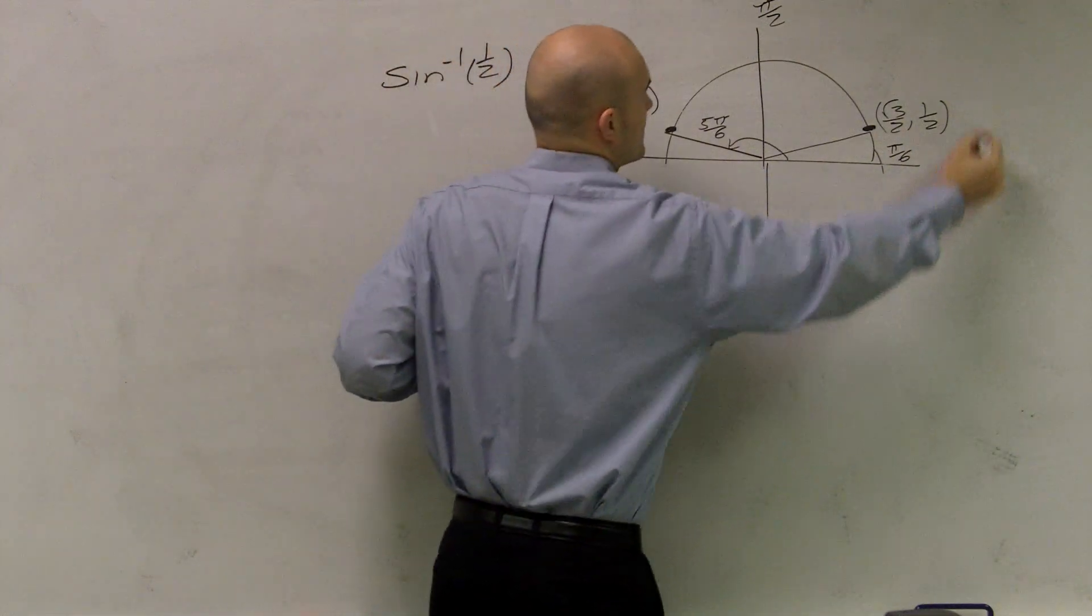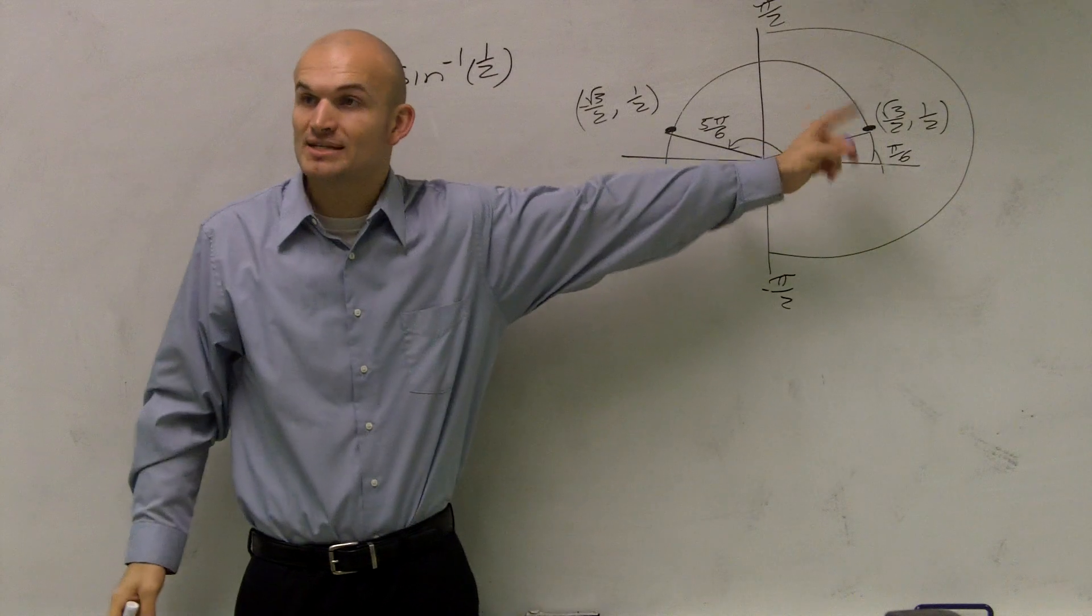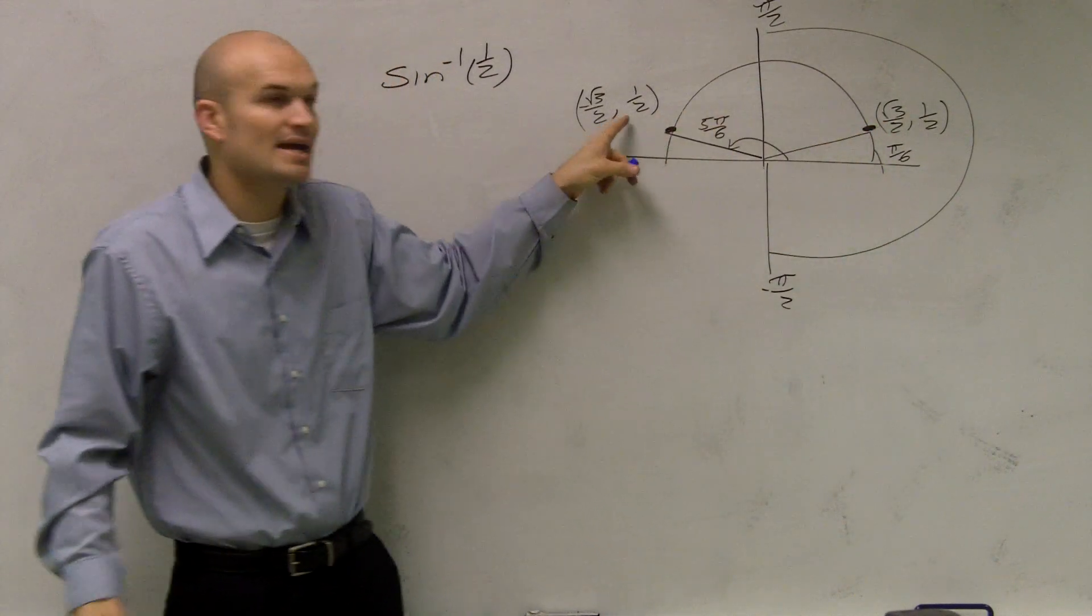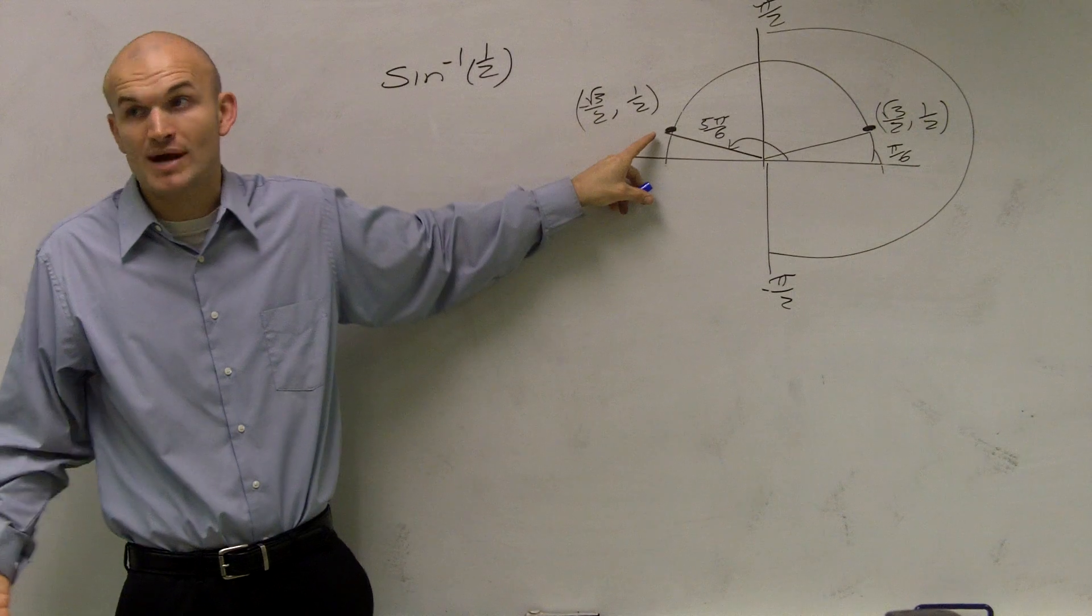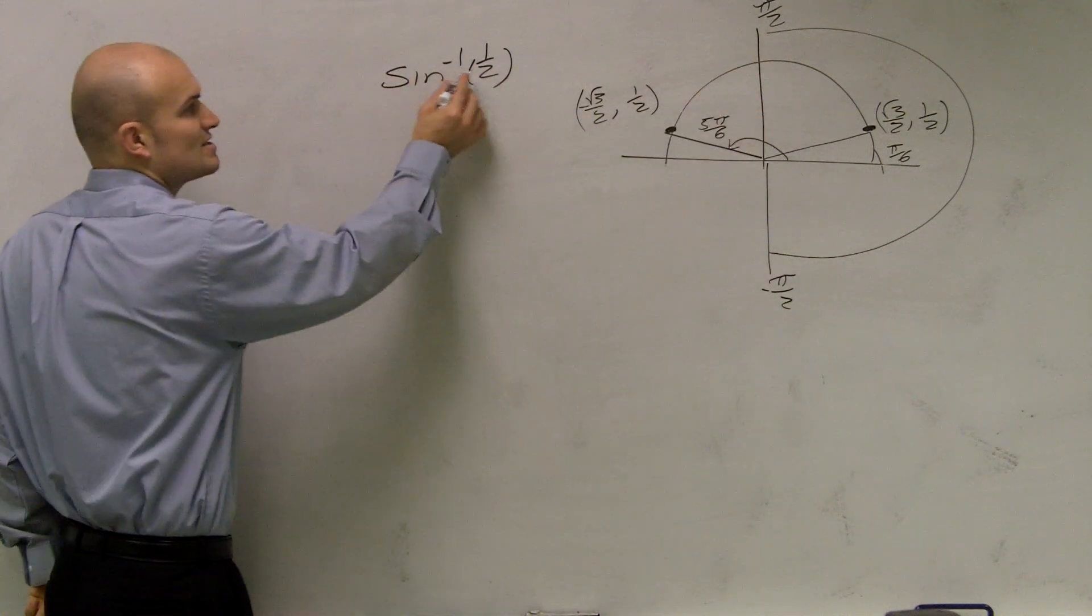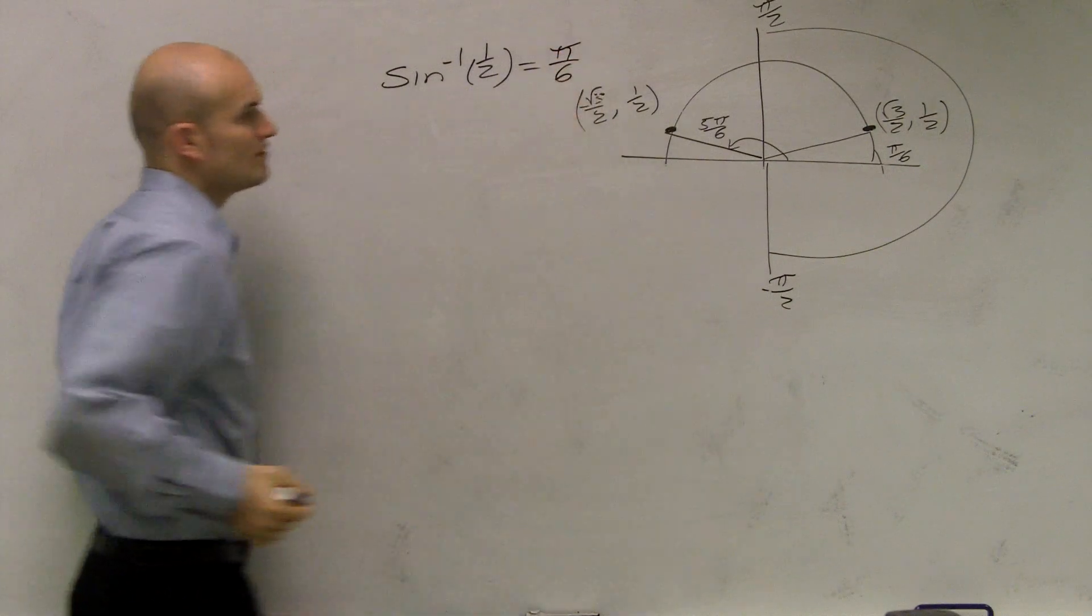So it has to be between these two values. Obviously, our only angle that's going to work is going to be this angle, right? Because this angle is not within our restriction, or actually, within our range. Therefore, the inverse sine of 1/2 is going to be π/6.